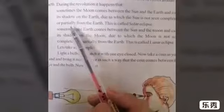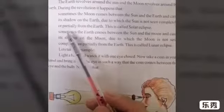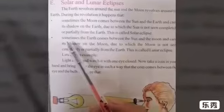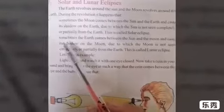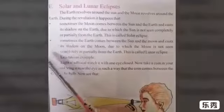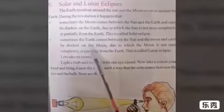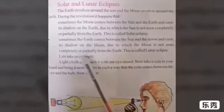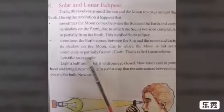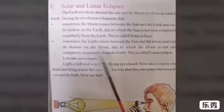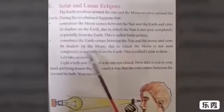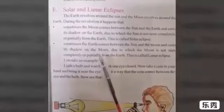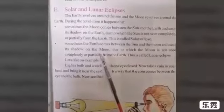The earth revolves around the sun and the moon revolves around the earth. Sometimes the moon comes between the sun and the earth — this is called a solar eclipse. And sometimes the earth comes between the sun and the moon — this is called a lunar eclipse, causing one to not see completely or only partially.